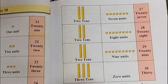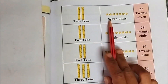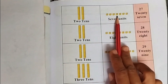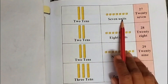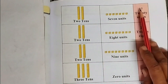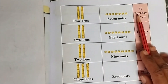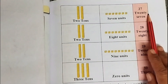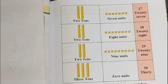1 ten, 2 tens, and 7 units: 27. In figure: 27. In words: T-W-E-N-T-Y (20) S-E-V-E-N: 27.